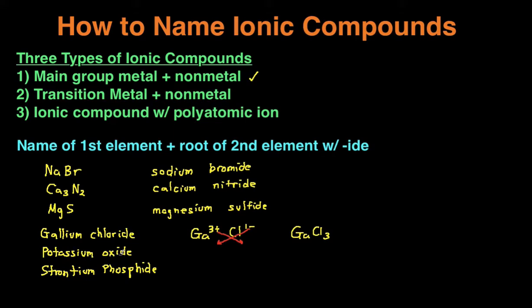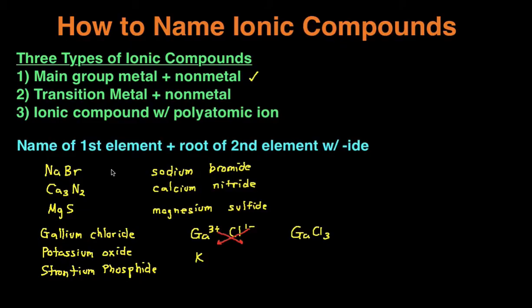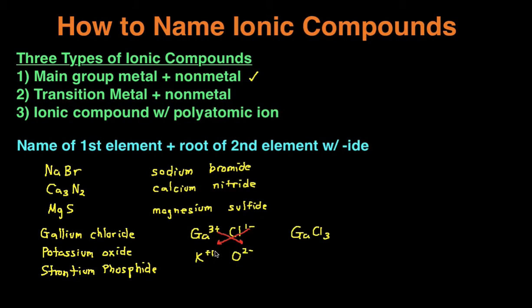Next example: potassium oxide. First, write the elements with their charges. Potassium is in the first column, so it's going to be a positive one charge. Oxide is oxygen — oxygen is over here. Reviewing the column charges: positive one, positive two, positive three, positive four, negative four, negative three, and then oxygen is in the column of negative two. Check if the charges cancel — they do not — so we crisscross. That gives us K₂O₁, or just K₂O.